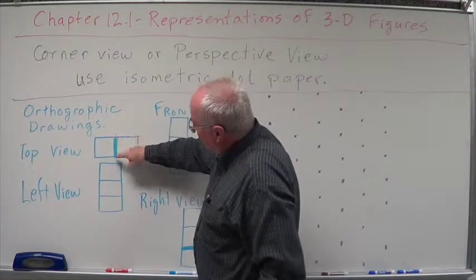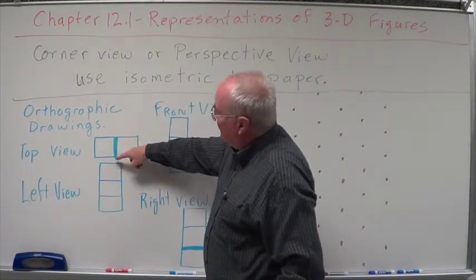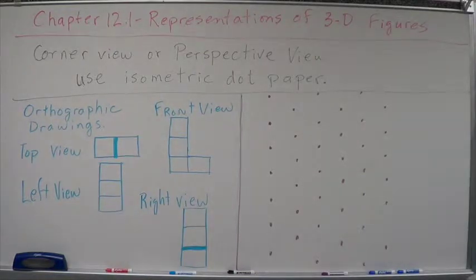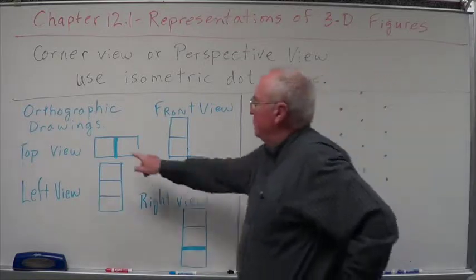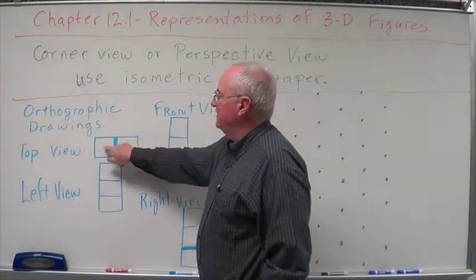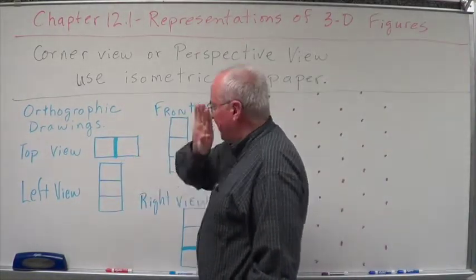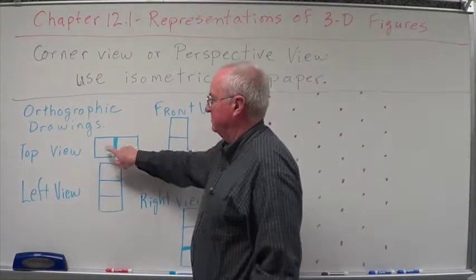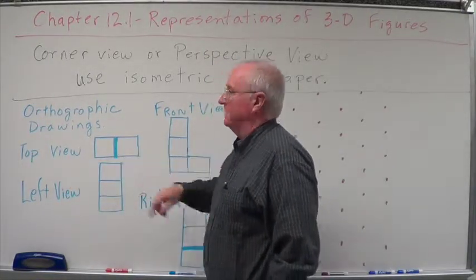Now, you'll notice that right here, this is an extra heavy or double line. What that means is that there is a difference in the height between these two. These are not on the same level. I'm looking at the top, and these two are not on the same level. One is higher than the other one.